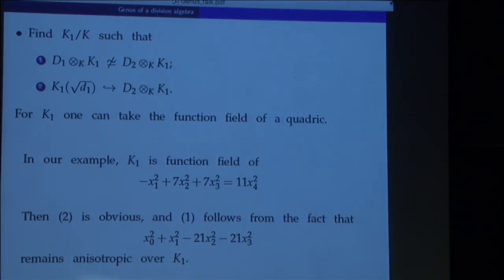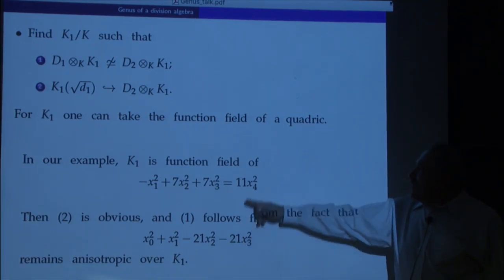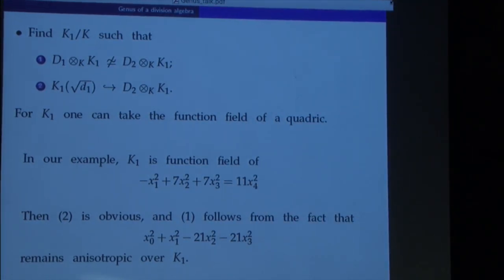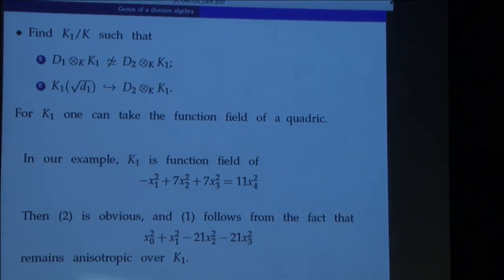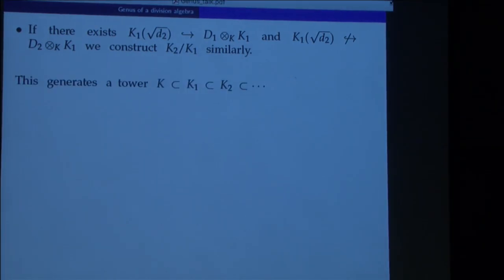The algebra D1·D2 in the Brauer group will be the algebra (-1, 21), and its reduced norm form remains anisotropic over the function field of that quadric by results on pfister forms — both have four variables but the discriminant of this product is not a square. If after this base change the algebras have the same subfields, we're done; typically this is not what happens. We find an extension that embeds into one but not the other and iterate the procedure, generating a tower of extensions, and for the required field we take the limit of that tower.